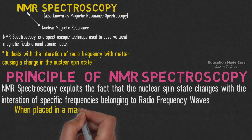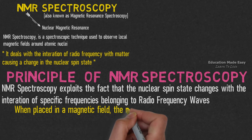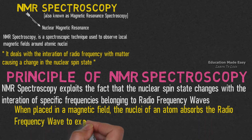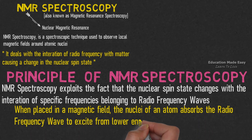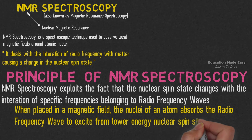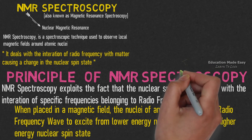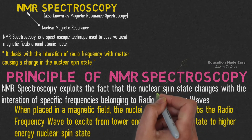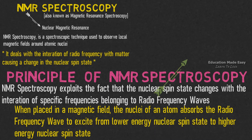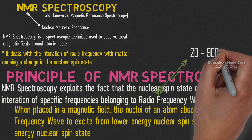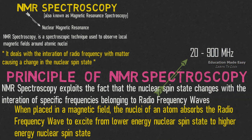When placed in a magnetic field, the nuclei of an atom absorbs the radio frequency waves to excite from a lower energy nuclear spin state to a higher energy nuclear spin state. The radio frequency range which makes NMR spectroscopy possible belongs to 20 to 900 megahertz.